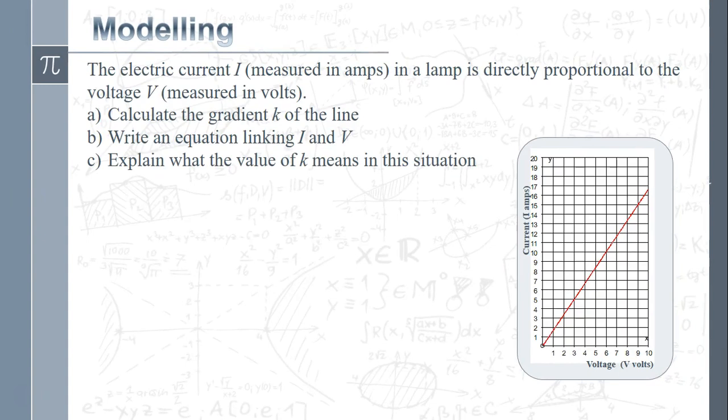We've got one that's directly proportional - the electric current in amps is directly proportional to the voltage. Calculate the gradient of the line - straightforward stuff. Gradient is change in y over change in x. Let's just pick a couple of points on the line and we've got a gradient 10 over 6 which cancels down to 5 over 3.